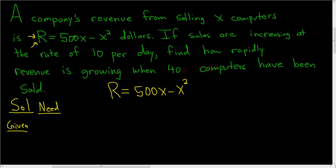So we're told that sales are increasing at a rate of 10 per day. Okay, so sales will be dX/dt, and it's a positive 10 because sales are increasing.